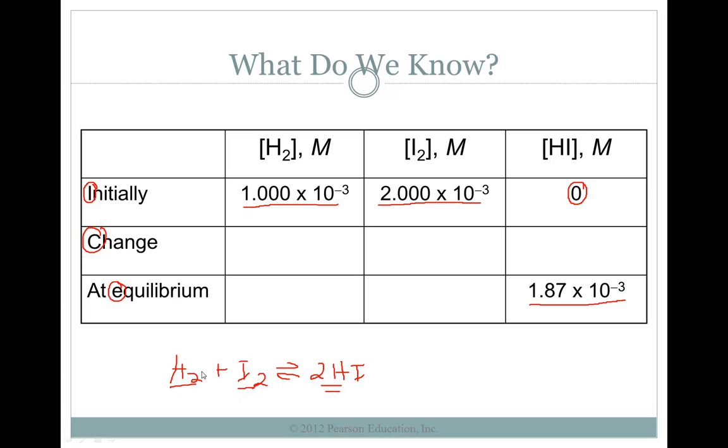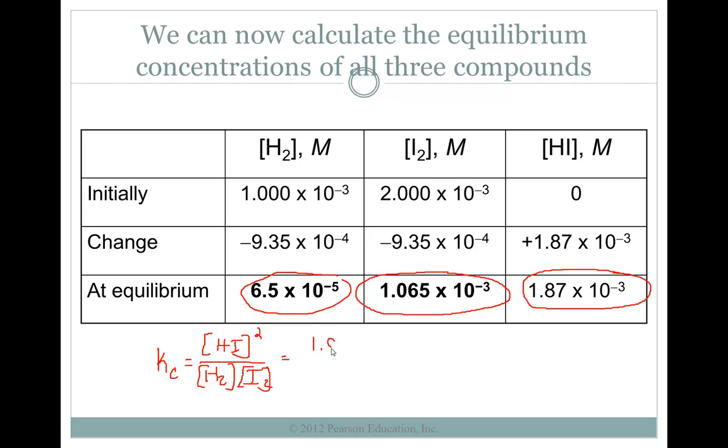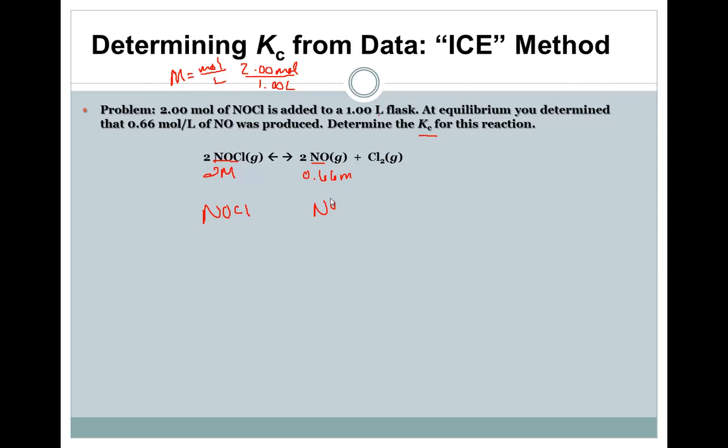Let's start off with a very simple one of just simply solving for the Kc. Determine the equilibrium concentration value given the following concentrations at equilibrium for the chemical reaction at room temperature. We know that the chemical expression is Cl2 times NO, and because of this two here it's going to be NO squared.